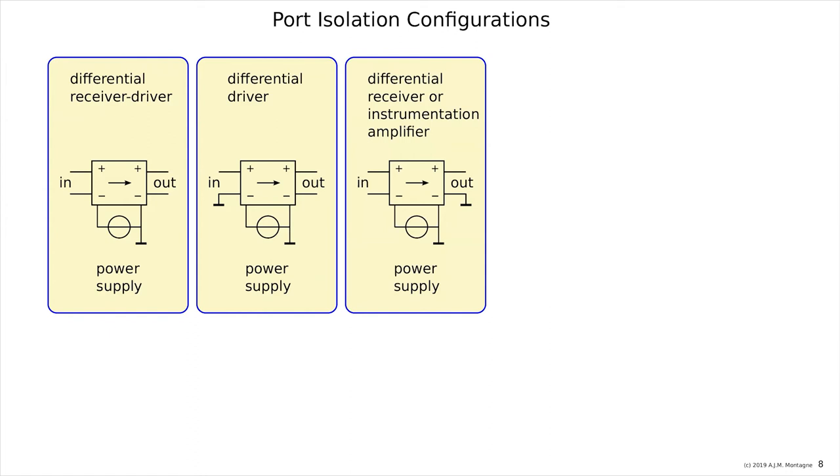Then we have a differential receiver, often called an instrumentation amplifier, a floating input with respect to the power supply, and a grounded output port. So the output port shares one node with a power supply.